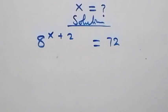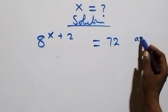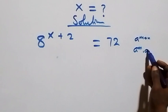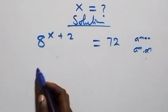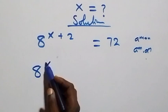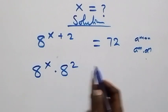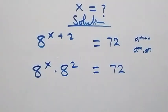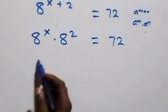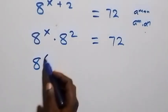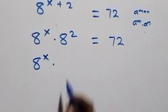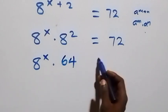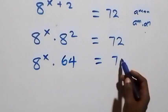This follows from when we have a raised to power n plus n, which is the same thing as a raised to power n times a raised to power n. Here it is the same thing as 8 raised to power x times 8 squared. 8 squared is 8 times 8, which is 64, and that equals 72.